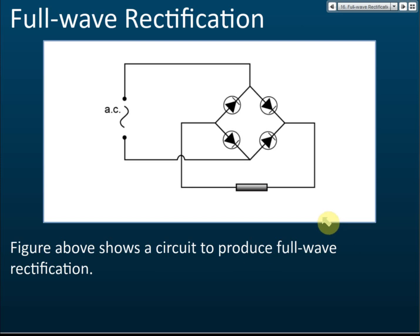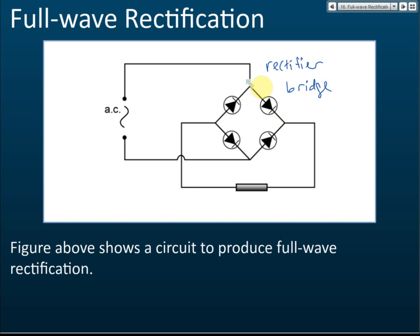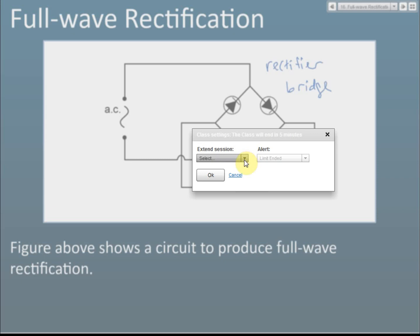So we change the design a little bit and try to keep all the currents in the circuit. We come up with this thing called a rectifier bridge. A rectifier bridge consists of four diodes, as you can see here.